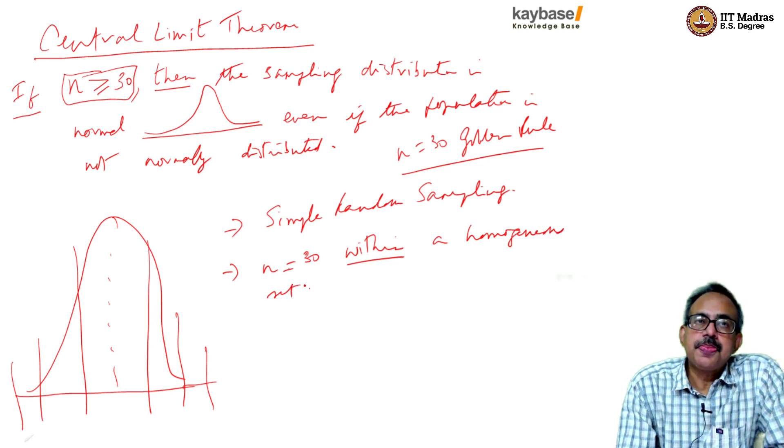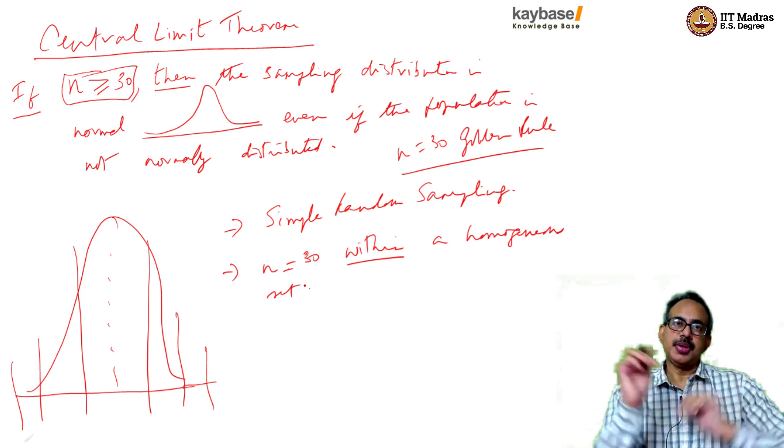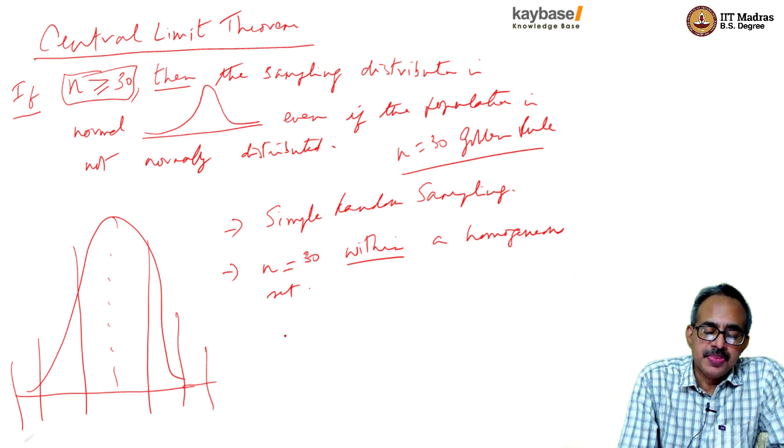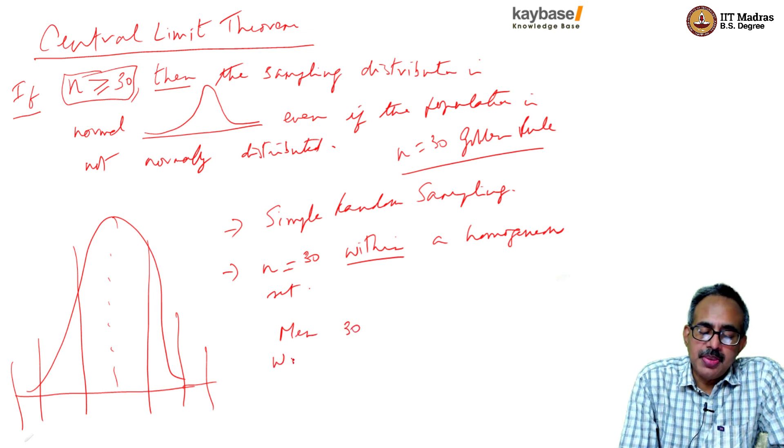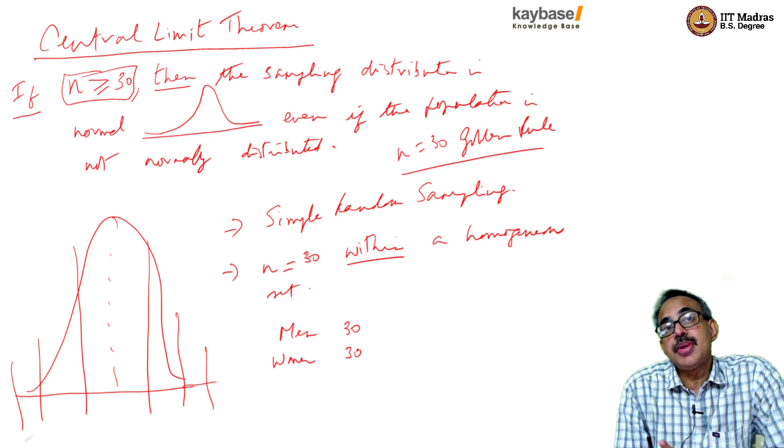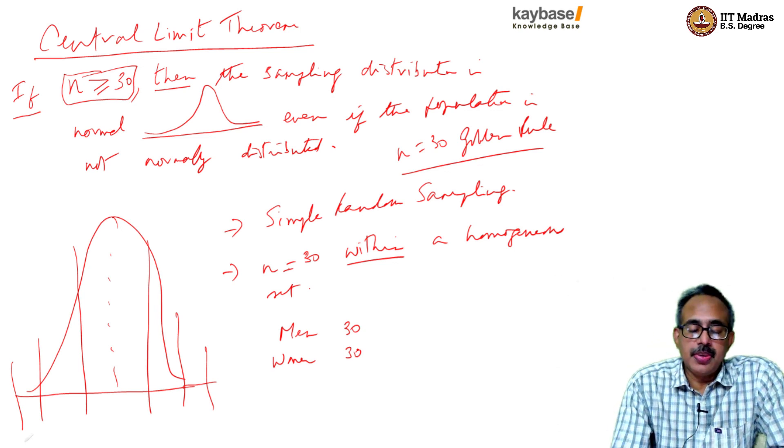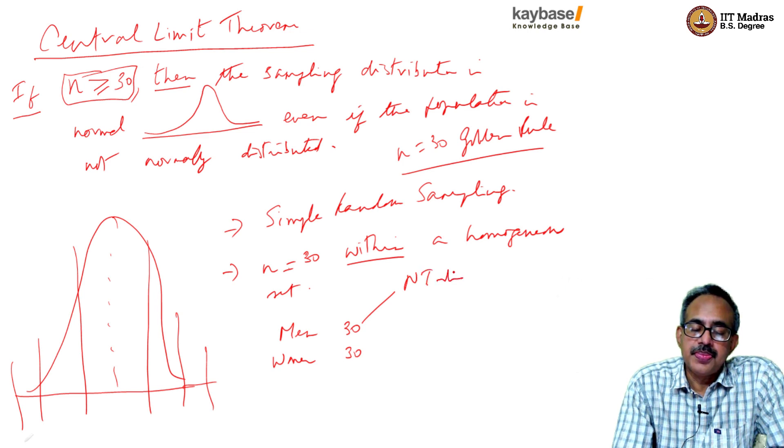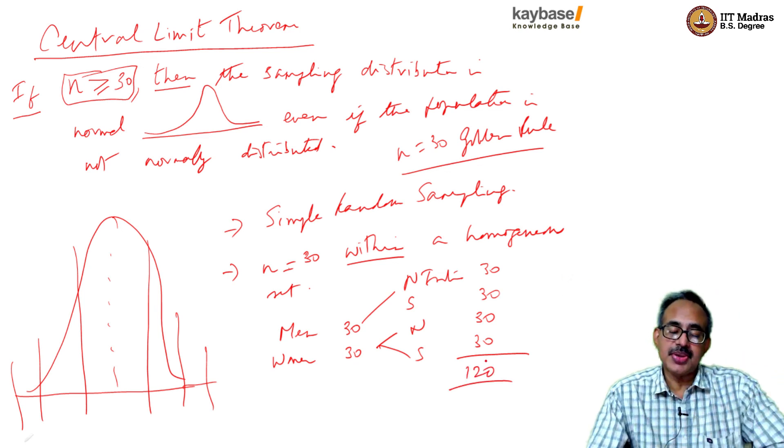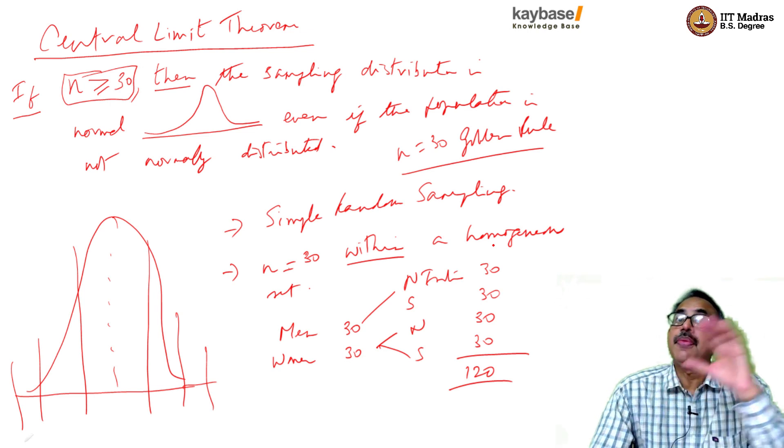Two, the N equal to 30 within a homogeneous set. That is an important part of it. It can't be 30 across the population. So we're measuring height of people, just for example. Then men should be 30 and women should be 30, because the height of men and women tends to be different. Or you can even define it further saying men from North India should be 30, men from South should be 30, women from North should be 30, women from South should be 30. So minimum 120 we require.